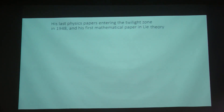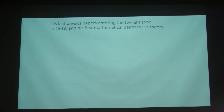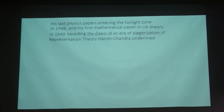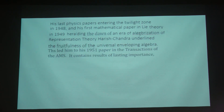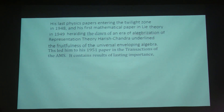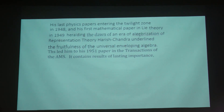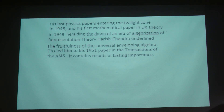His last physics papers entering the twilight zone in 1948, and the first mathematical paper in Lie theory in 1949, heralding the dawn of an era of algebraization of representation theory — Harish Chandra underlined the fruitfulness of the universal enveloping algebra. This led him to his 1951 paper in the Transactions of the AMS. It contains results of lasting importance.